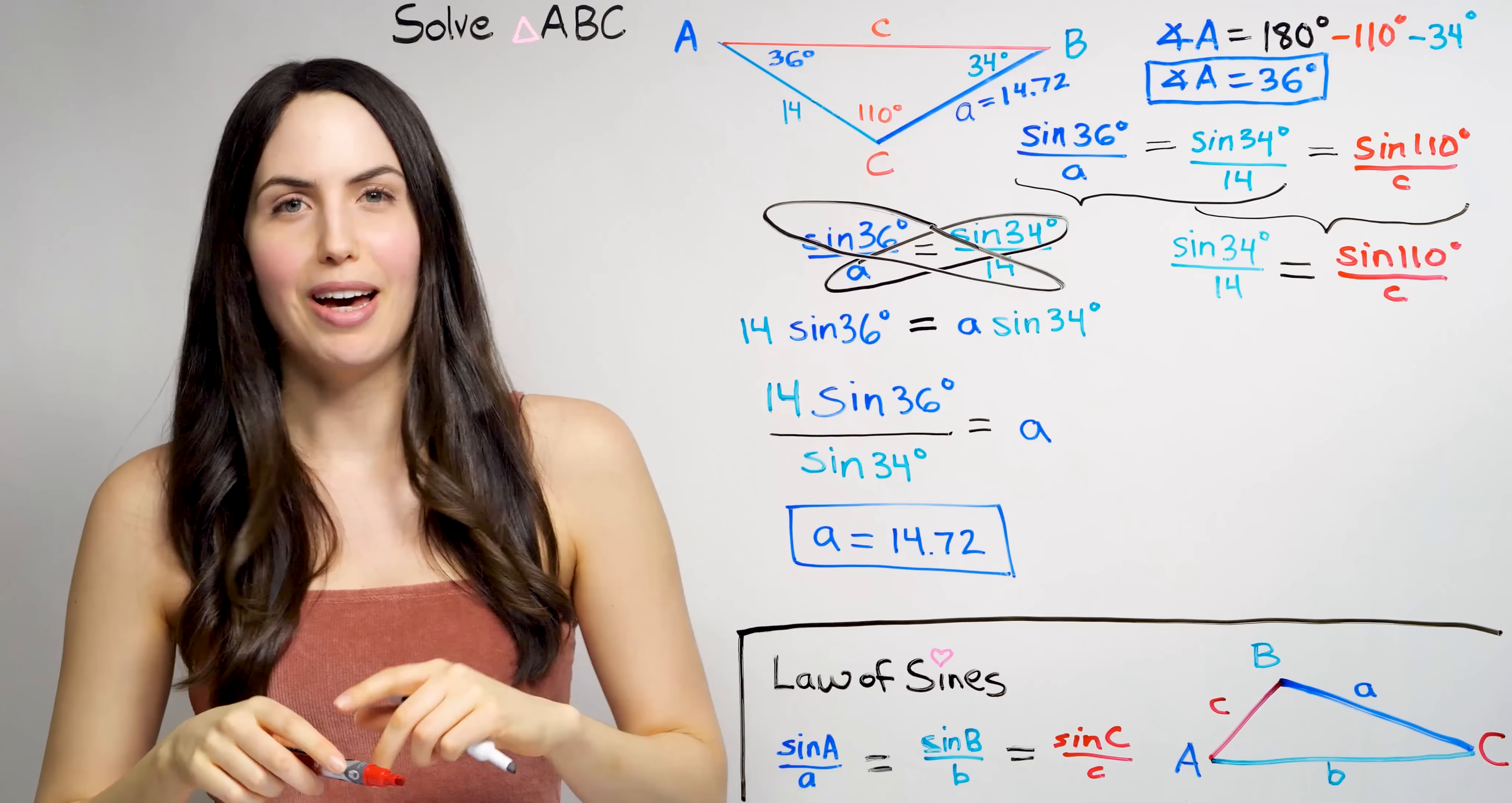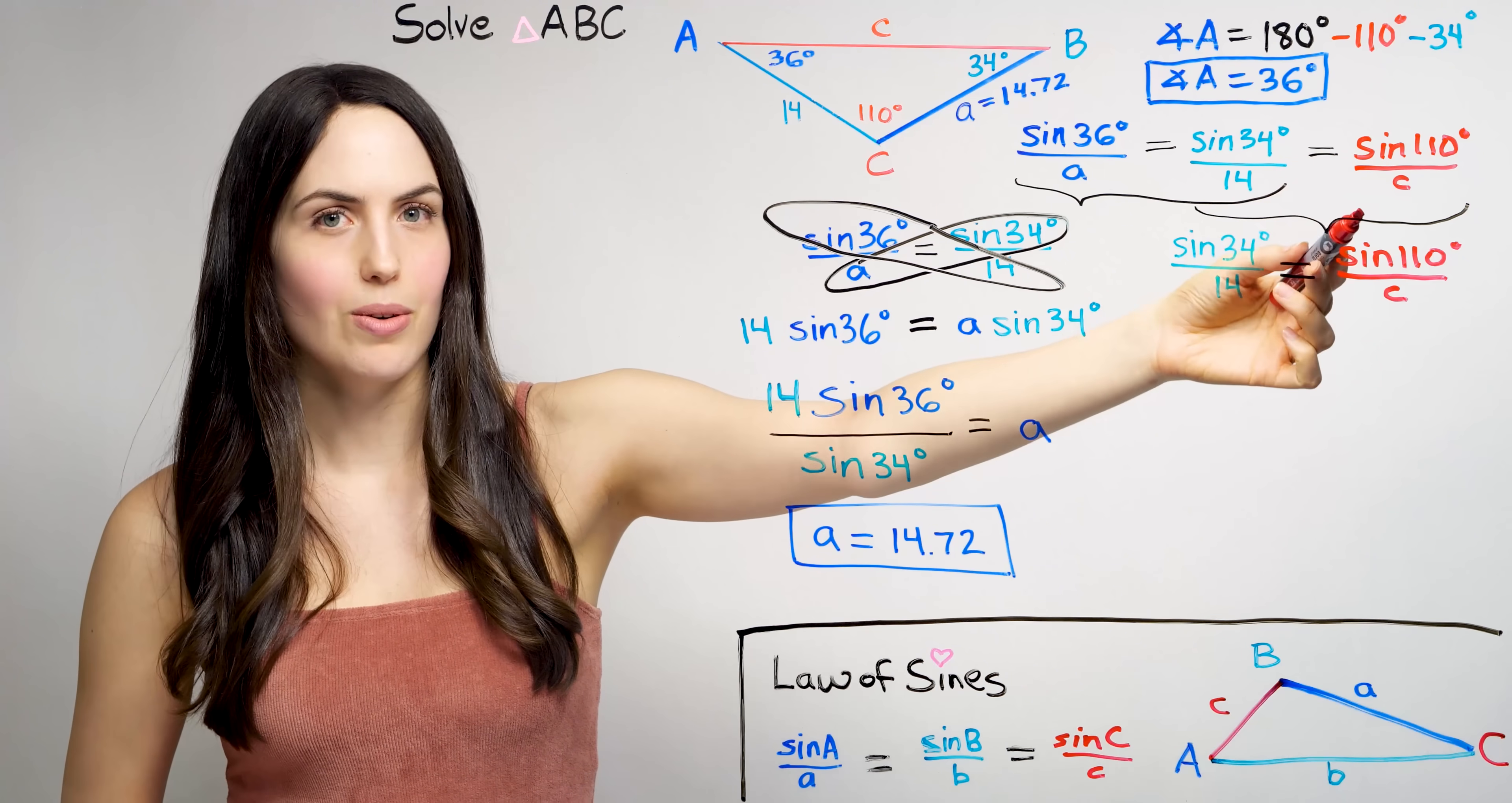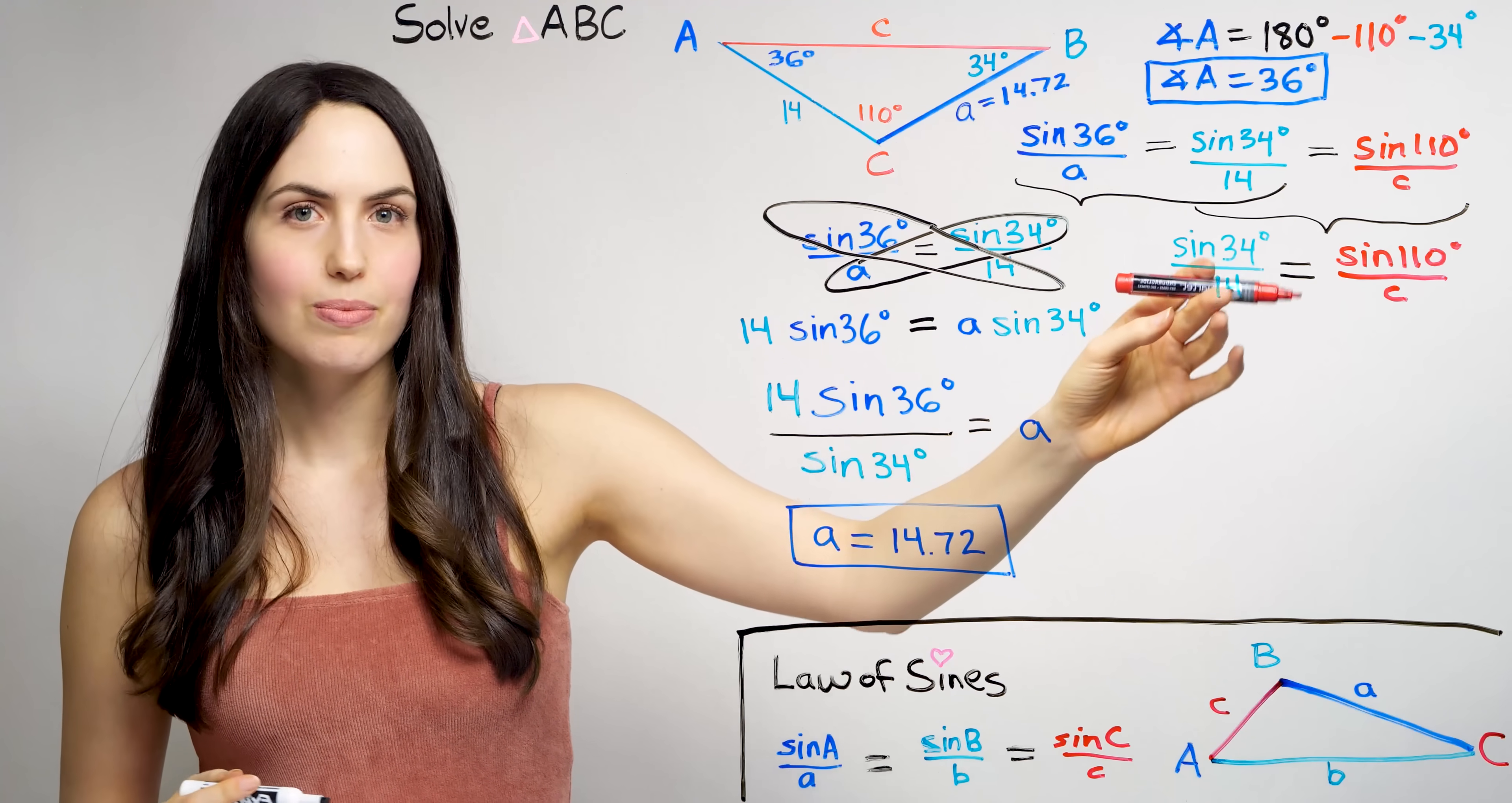Well, that was bad robot impression. But basically, use whatever ratio has what you want to find in it as the only unknown, and set it equal to a ratio where you know everything already, and you'll get the answer.